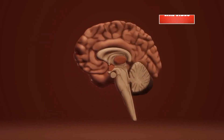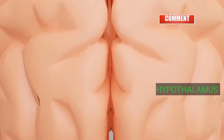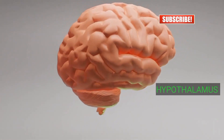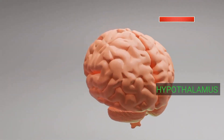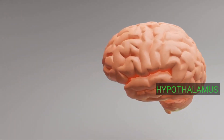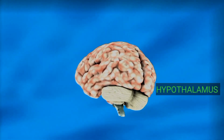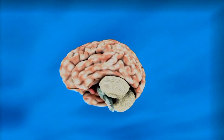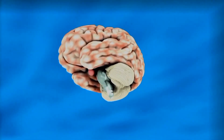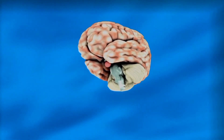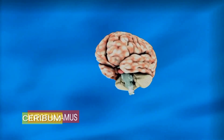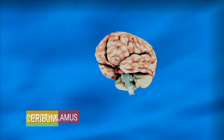The Hypothalamus is the major control center of the autonomic nervous system and plays a central role in homeostatic regulation. It links the nervous system to the endocrine system via the pituitary gland. It also contains nuclei involved in regulation of body temperature, food and water intake, sleep and wake cycle, memory and emotional behavior.